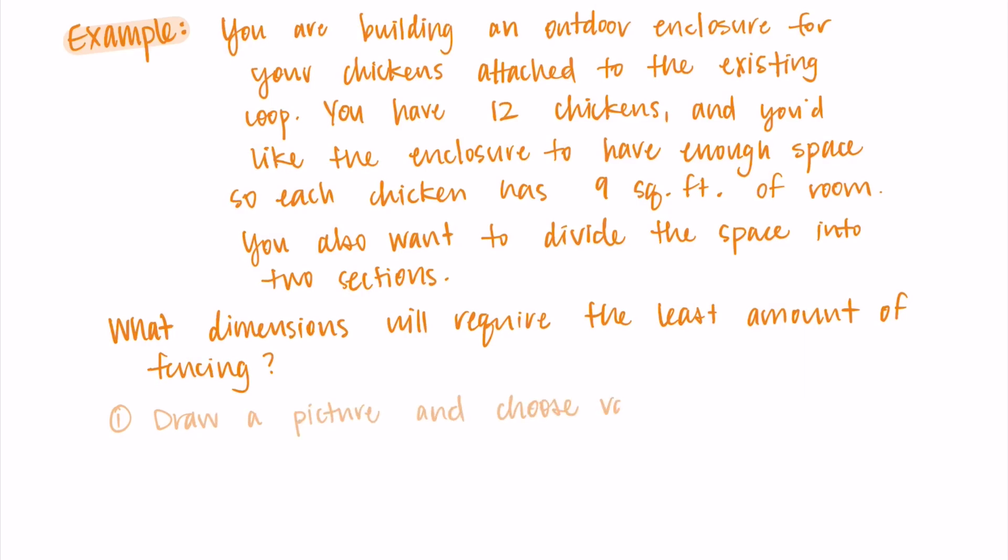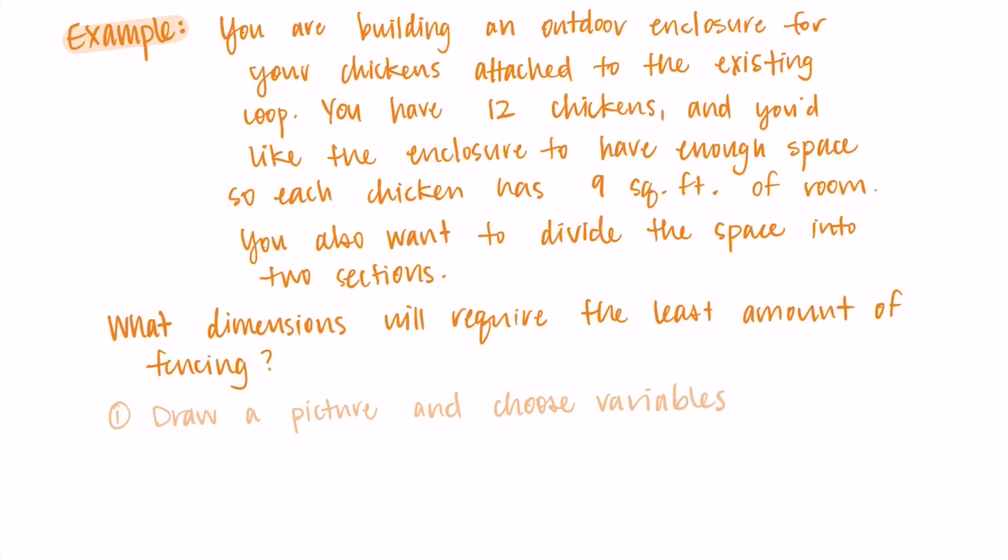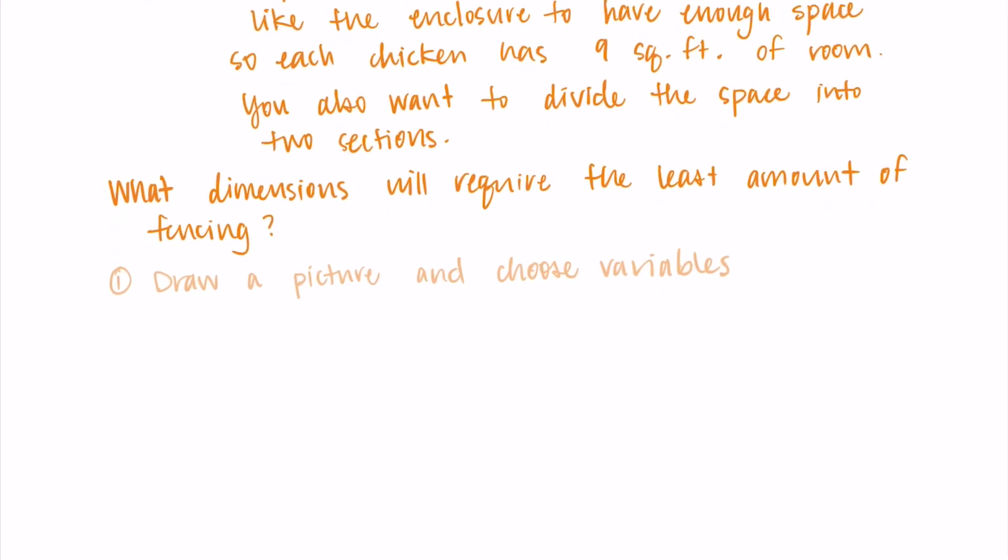First, I'm going to draw a picture and choose some variables to represent the different components. So we have a chicken coop on one side and then we have a rectangular enclosure attached to it. It also has a divider in the middle. I'm just choosing X and Y as my variables here. If X is the length of the divider, it's also the length of the sides. And then I'm just going to call that whole bottom length Y.